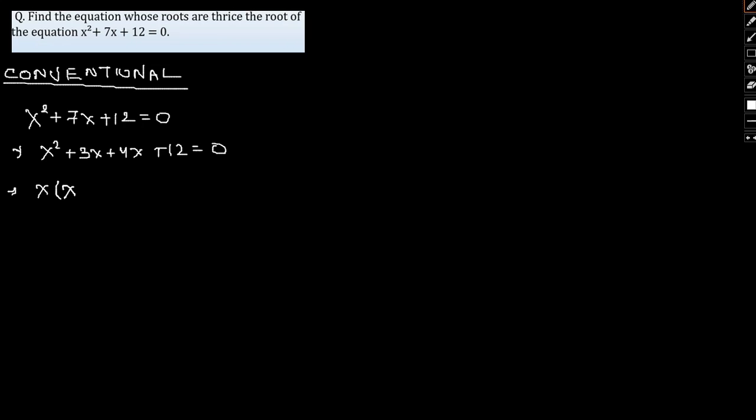x common I take x + 3, plus 4 common I take x + 3 = 0. So (x + 4)(x + 3) = 0. Therefore my roots are x = -4 and -3.